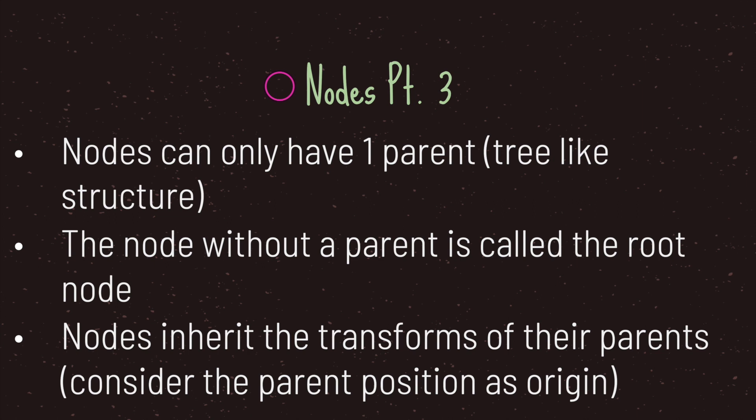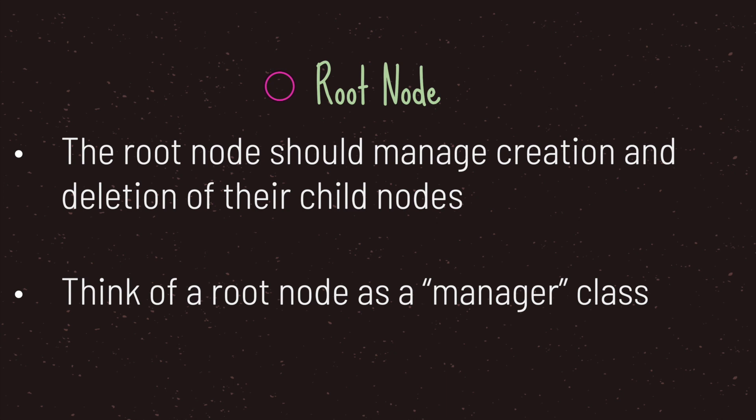A node without a parent is called the root node, and nodes inherit the transforms of their parents. You can consider the parent position as the origin that all children nodes revolve around. The root node should manage creation and deletion of their children — you can think of the root node as a manager class.